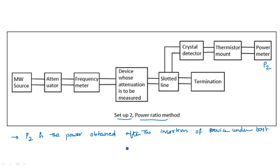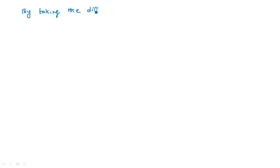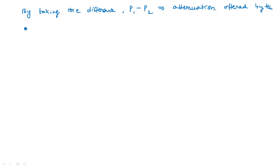We take the difference between P1 and P2. P1 minus P2 gives the attenuation offered by the device under test. This is one way to measure attenuation, known as the power ratio method.